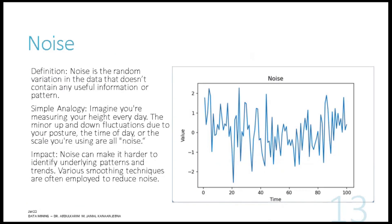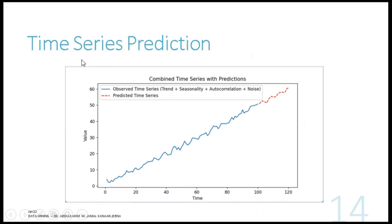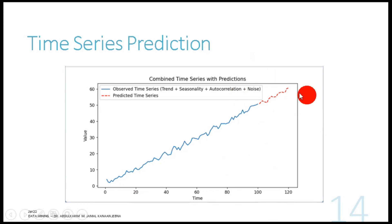Noise is random variation inside the dataset and does not contain any useful information. Noise can exist in any dataset — not only in time series, but also in regression and classification datasets. When you work on time series prediction, you look at previous values (the blue line) and then forecast future values, taking into account trend and seasonality.